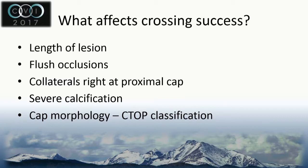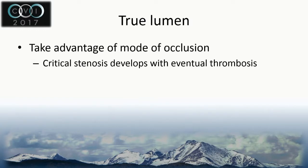What affects crossing success? We talked about length of lesion, flush occlusions, collaterals right at the proximal cap, and severe calcification is a huge one. We talked about cap morphology and shape and different classifications — whether it's concave or convex, such as the C-top classification.